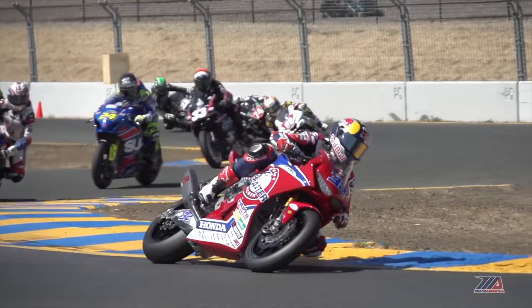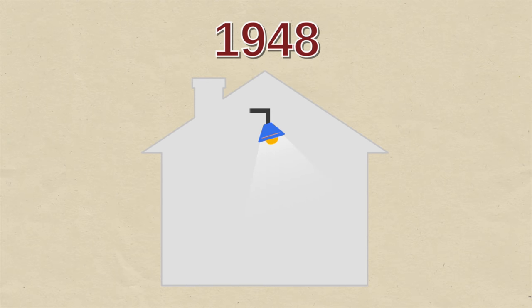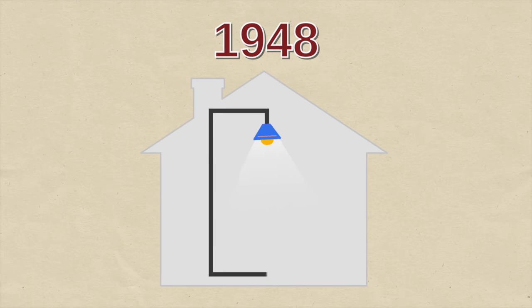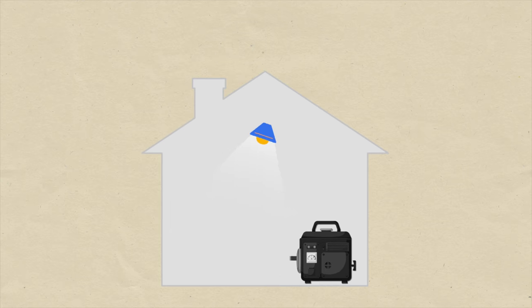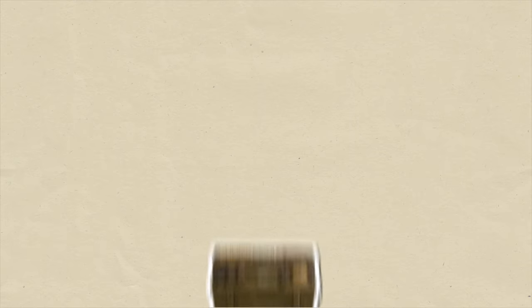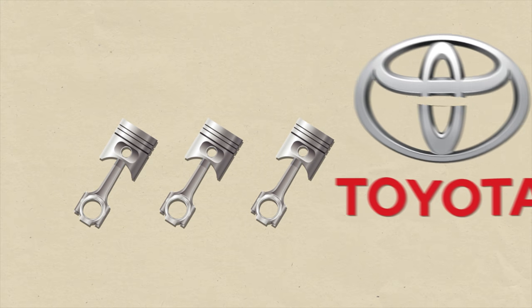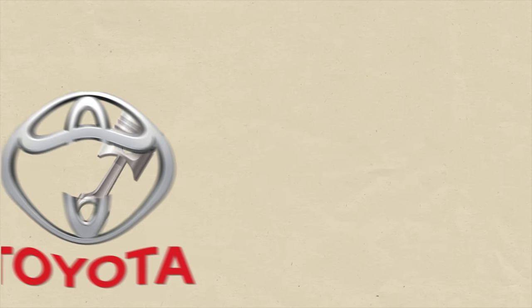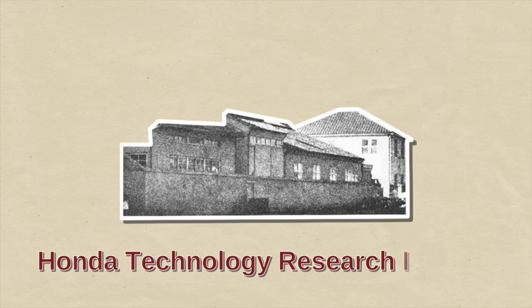Our story starts in 1948. Soichiro Honda is visiting the home of a friend when he happens to see a small generator engine. Thousands of these engines were manufactured during the war to power the wireless radios of the army. This tiny engine gives Soichiro a big idea. He sells most of what's left of his old piston manufacturing company to Toyota to finance his new idea, but he keeps one of the only buildings left standing and sets up the Honda Technology Research Institute.